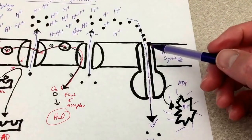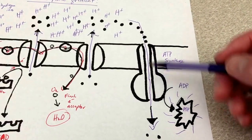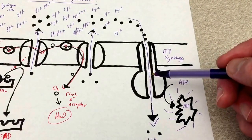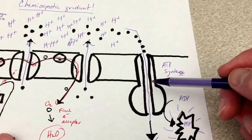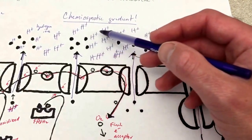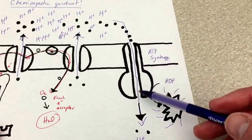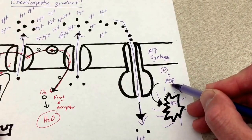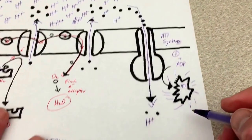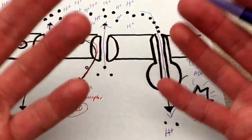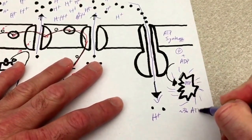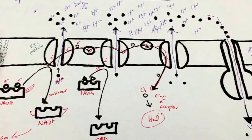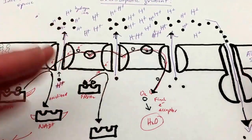If you've ever seen how a hydroelectric power plant works — water flows through a dam and turns a turbine, generating power — this is an analogous situation. As the hydrogens from this chemiosmotic gradient flow through the channel of ATP synthase, ATP synthase takes an inorganic phosphate and puts it onto ADP to make ATP. For each molecule of glucose broken down at the very start, about 36 ATP are made by this process — a lot of ATP. We will summarize all three of these processes in the next video.